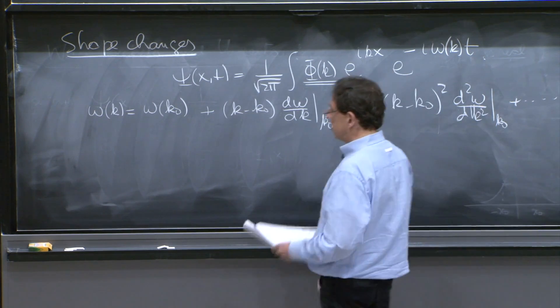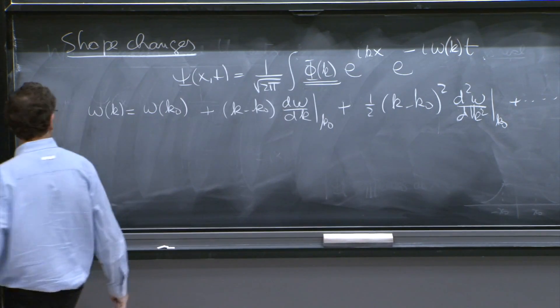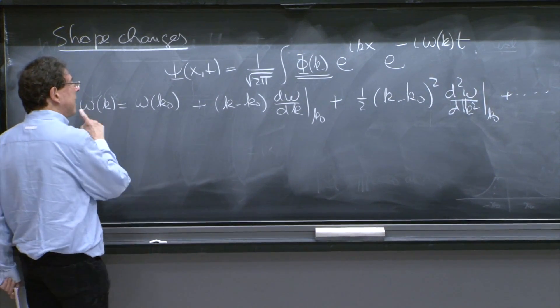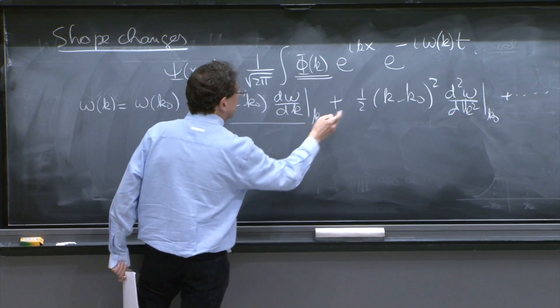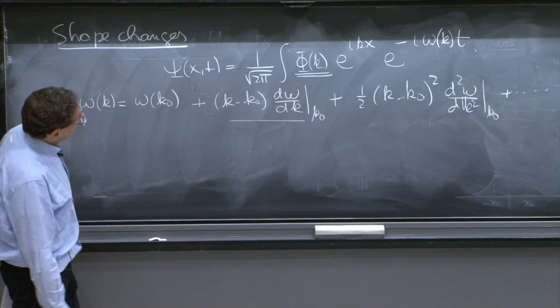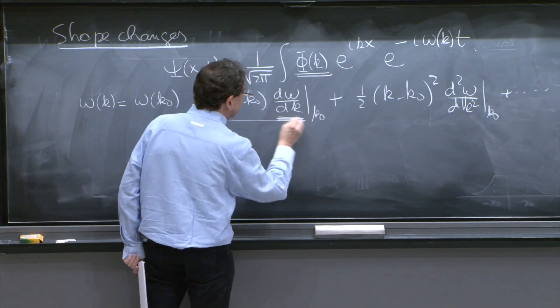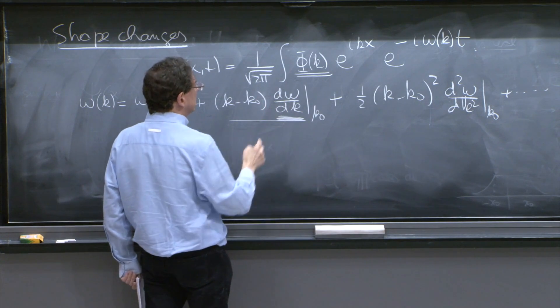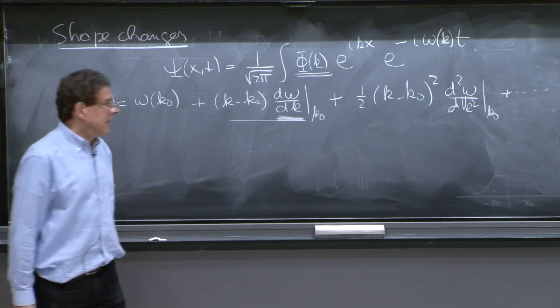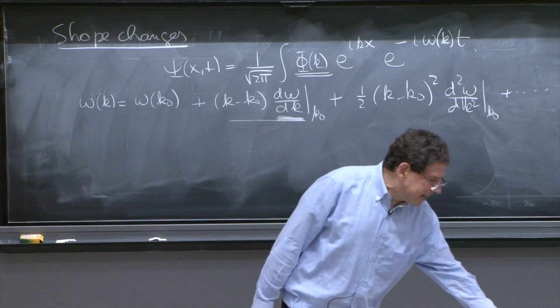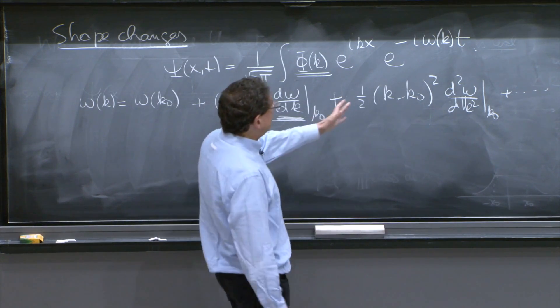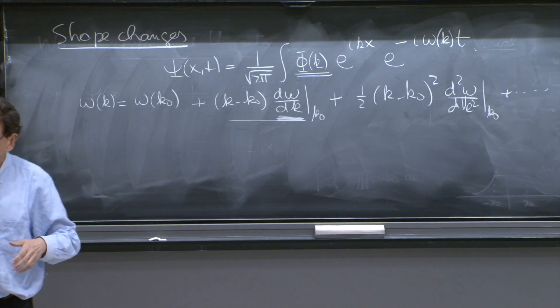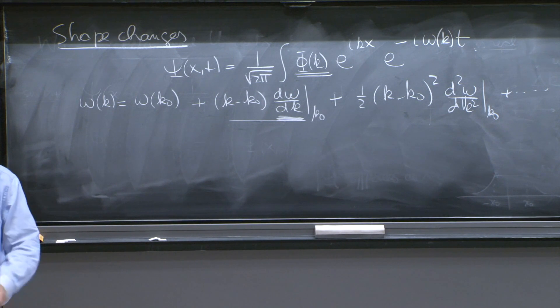It might seem that this goes on forever. What did we do before? We looked at this thing and did the integral with this term and ignored the next. With this term, we discovered that the profile moves with this velocity, the group velocity. Now we want to go back and at least get an idea of how this term could change the result, and it would change the result by deforming the shape of the packet.